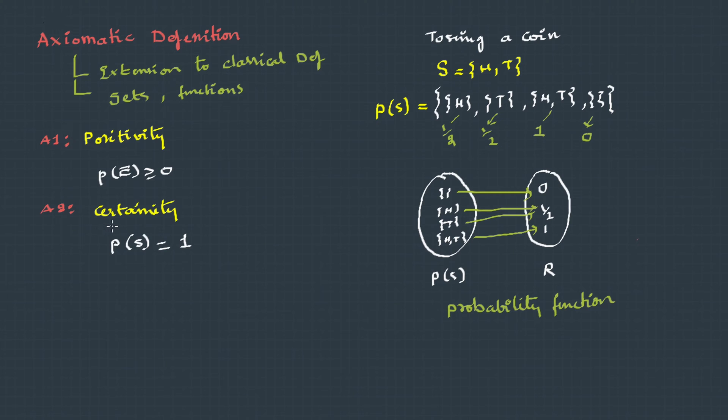The second one is the axiom of certainty, which says that one of the elementary events must lead to a probability one, which will be a sure shot event, which actually is the probability of the sample space. It conveys that an event must lead to an answer. There should not be any ambiguity.